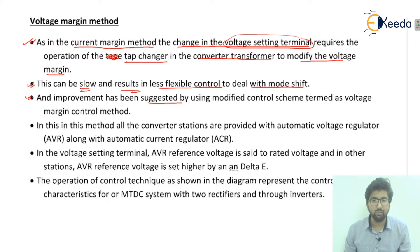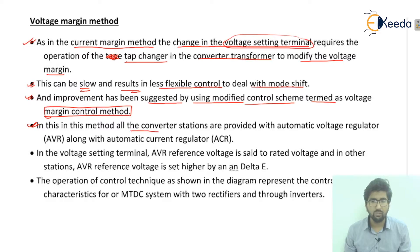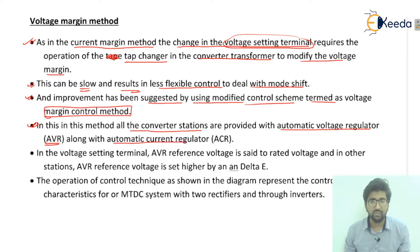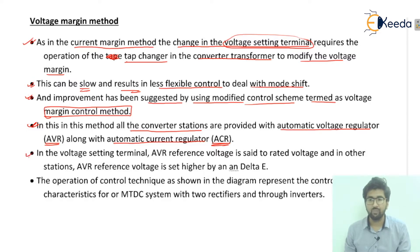An improvement has been suggested by using a modified control scheme termed the voltage margin control method. In this method, all converter stations on the rectifier and the inverter are provided with an automatic voltage regulator (AVR) along with an automatic current regulator (ACR). Both the AVR and ACR are used together across all converter stations.